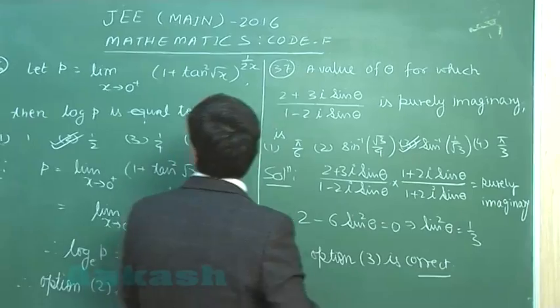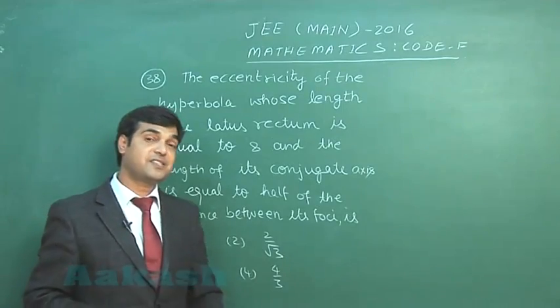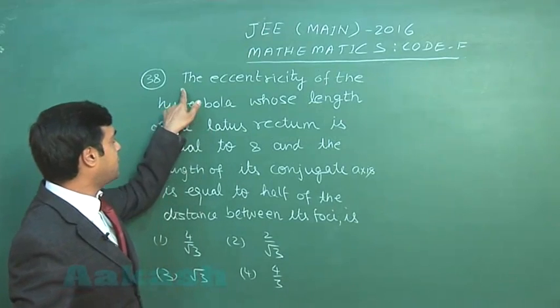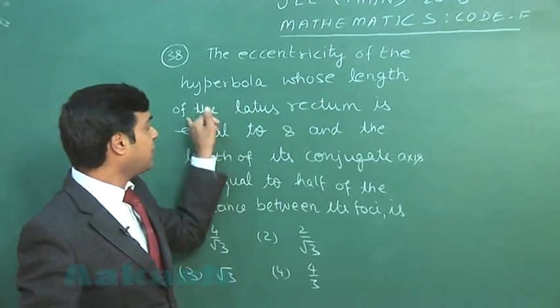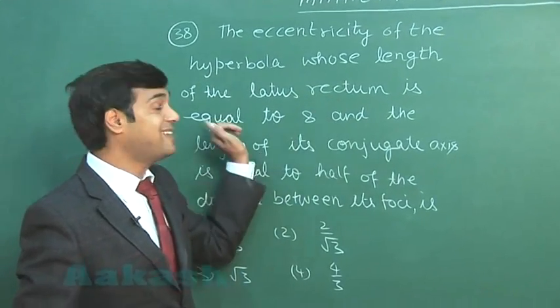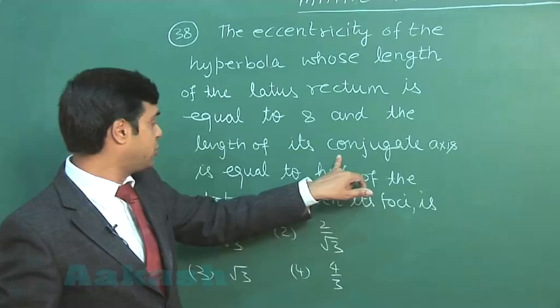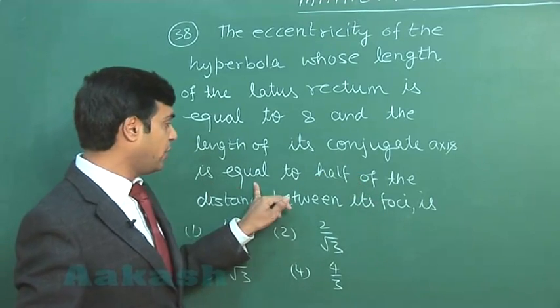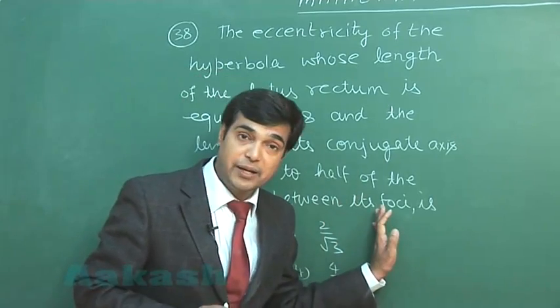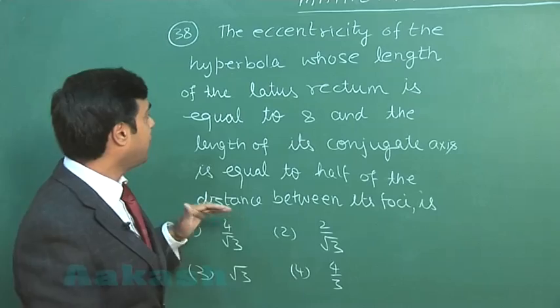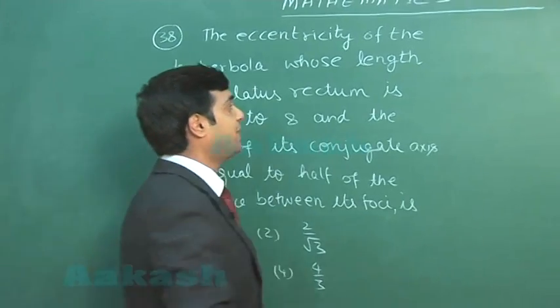Okay, let us start with question number 38. The eccentricity of the hyperbola whose length of the latus rectum is equal to 8 and the length of its conjugate axis is equal to half of the distance between foci. So what we have to find is the eccentricity of the hyperbola and some information is given.